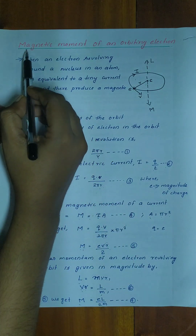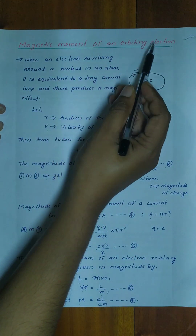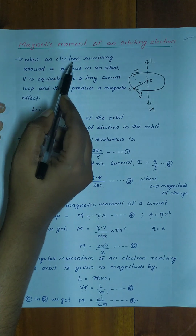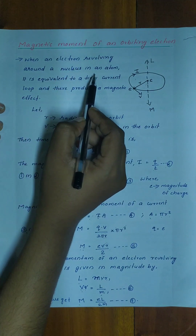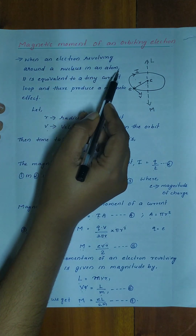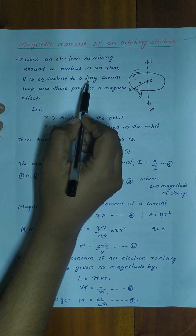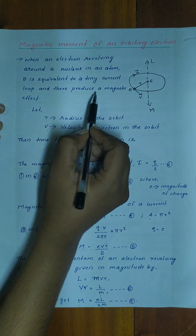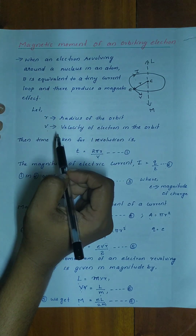Let's talk about the magnetic moment of an orbiting electron. When an electron revolves around a nucleus in an atom, it is equivalent to a tiny current loop and they produce a magnetic effect.